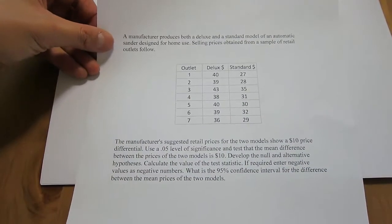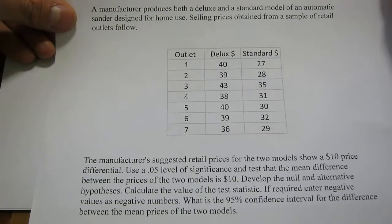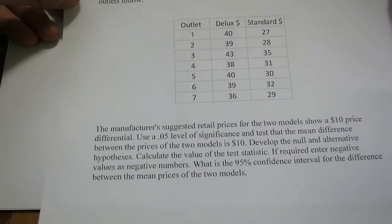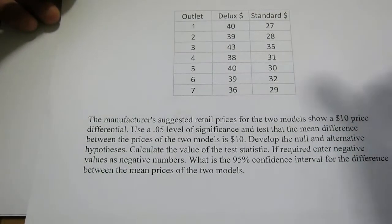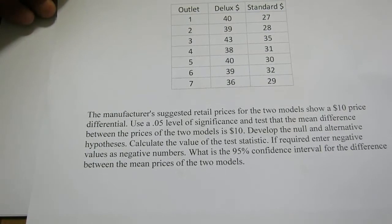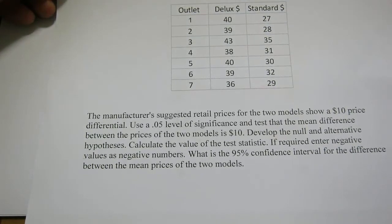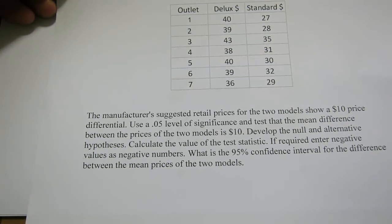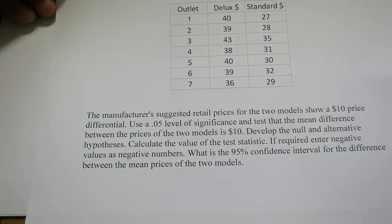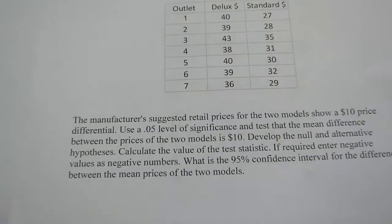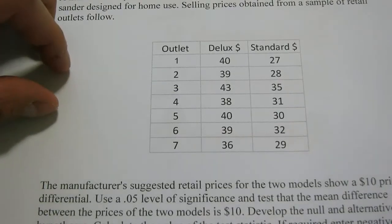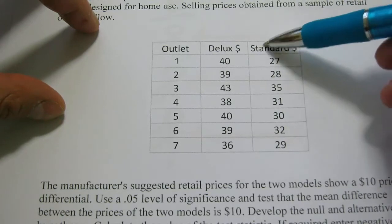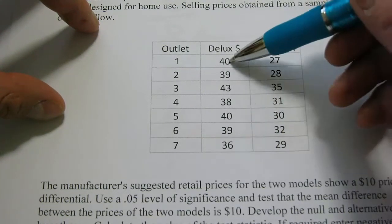Let's go through a worked example from scratch. A manufacturer produces a deluxe and a standard model of an automatic sander designed for home use. Selling prices obtained from a sample of retail outlets are as follows — we have seven outlets with different prices for the deluxe and standard version. The manufacturer's suggested retail prices show a $10 price differential. Use a 5% significance level and test that the mean difference between the prices of the two models is $10. The first thing to recognize is that we're dealing with two paired samples, not an independent sample of deluxe models and an independent sample of standard models. They're paired by the same outlet.